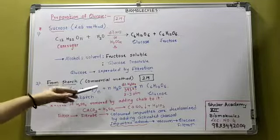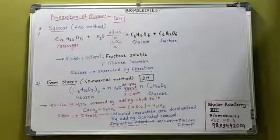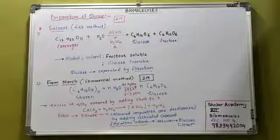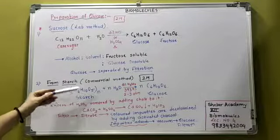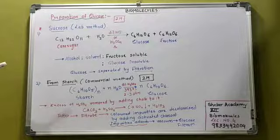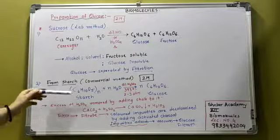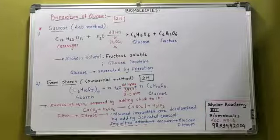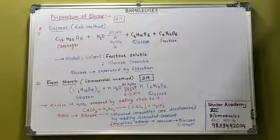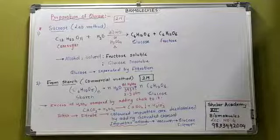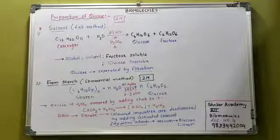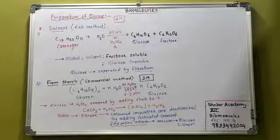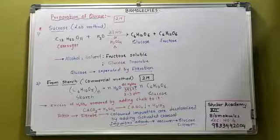It will undergo hydrolysis, so it will require N molecules of water and it is converted to glucose, N molecules. Writing this N is also important, otherwise marks are deducted for that. What are the conditions required? In the presence of dilute H2SO4, that is sulfuric acid, at temperature 393 Kelvin, at 2 to 3 atmospheric pressure. That is the condition required for glucose to be prepared from starch.